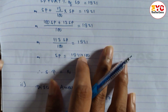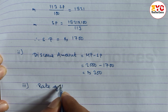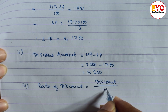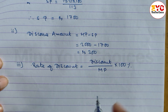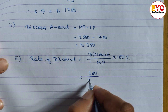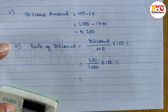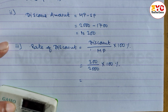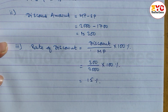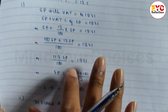Question number 3: compute the discount rate. The formula for rate of discount is: Discount Amount / MP × 100%. Discount is 300 and MP is 2000, so 300 / 2000 × 100% = 15%. Therefore the discount rate is 15%. Hope you understand question number 14A.